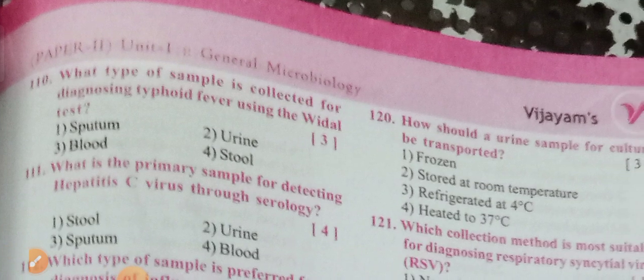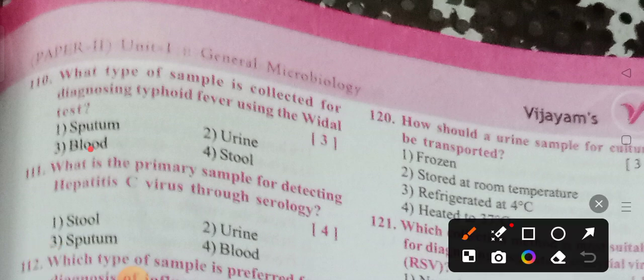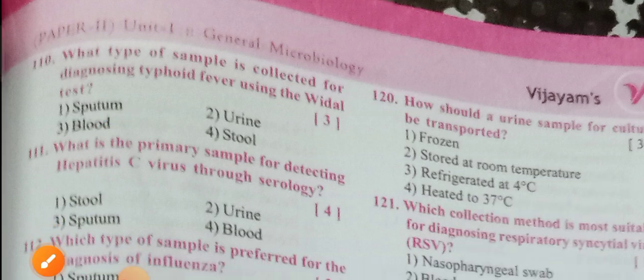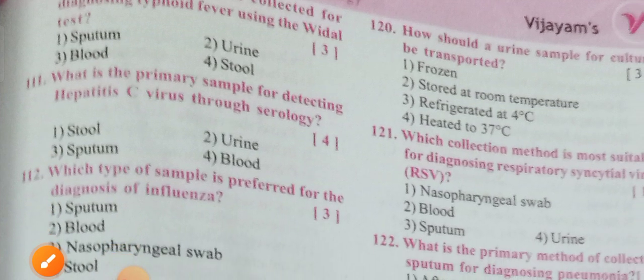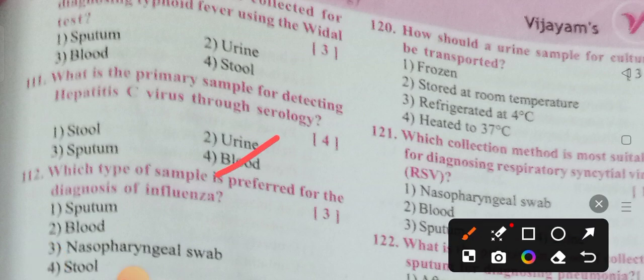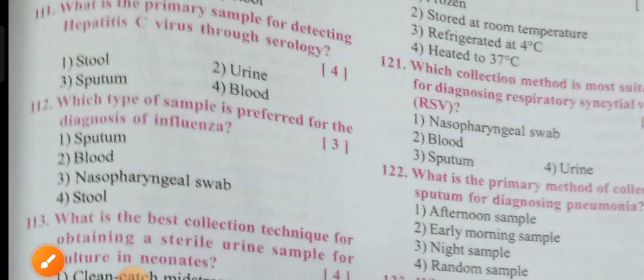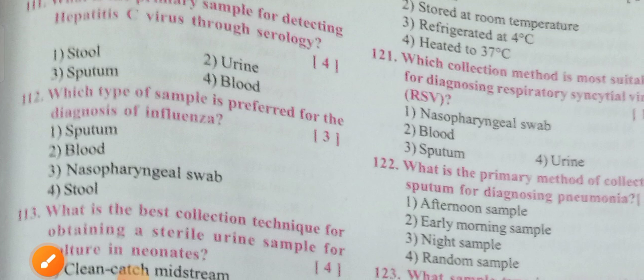What type of sample is collected for diagnosing typhoid fever using the Widal test? Options: sputum, urine, blood, stool. For typhoid fever using the Widal test, option 3 is the correct answer: blood. What is the primary sample for detecting hepatitis virus through serology? Options: stool, urine, sputum, blood. For serology, it is definitely blood only — option 4 is the correct answer.